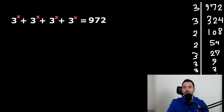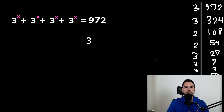So let's count. We had one, two, three, four, five. So this side will be — we have five threes — three to the power of five, multiplied by two to the power of two.